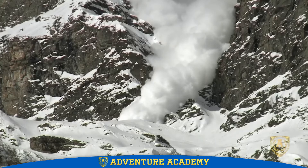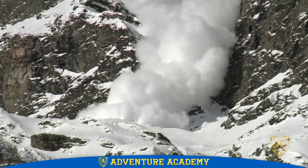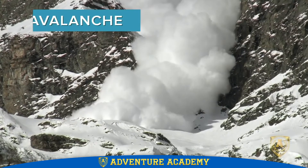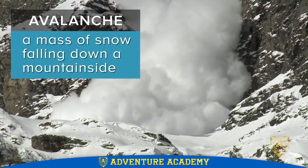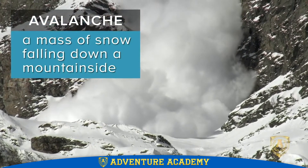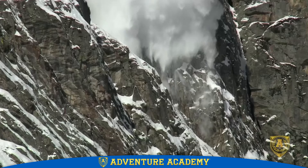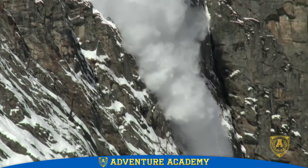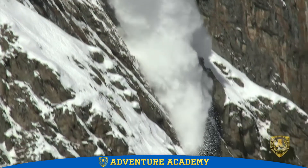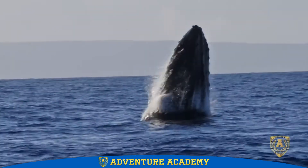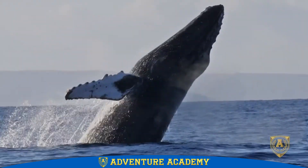This sudden movement of a large amount of snow down a slope is called an avalanche. The weight of snow in an avalanche can be as much as a million tons, and it can move as fast as 300 feet per second. That's like having 6,000 whales all moving faster than most hurricanes.